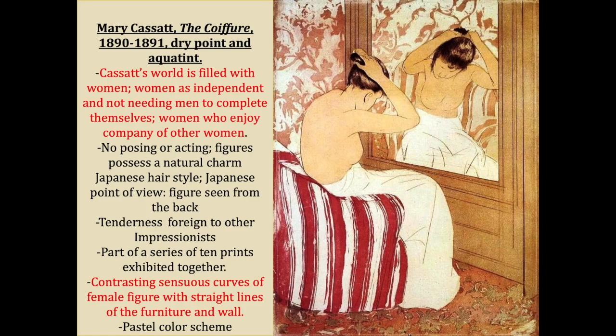The final impressionist artist you have to know is a woman — an American who goes to live in Paris and works with many impressionist artists. She is close friends with Degas. However, being a woman, she wasn't really allowed to paint the same subject matter as the men — it wasn't safe for a woman to go outside alone with her paints — so she paints a lot of interior settings of women and children, showing a woman's world from an impressionist perspective. Cassatt's world is filled with women who are independent, not needing men to complete themselves.